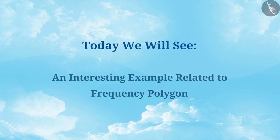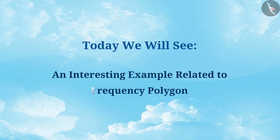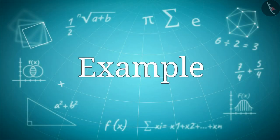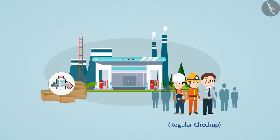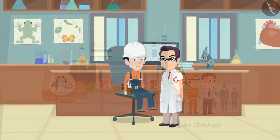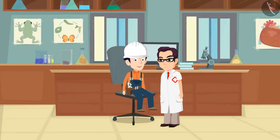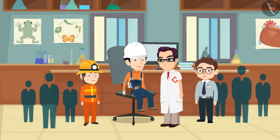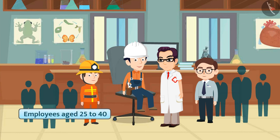Today we will see an interesting example related to frequency polygon. Regular checkup is done for the health of the employees working in a medicine factory. A doctor was called to the factory to get the employee's health checked. The doctor divided the staff into two age groups before examining the employees: employees aged 25 to 40 and employees aged between 40 to 60.